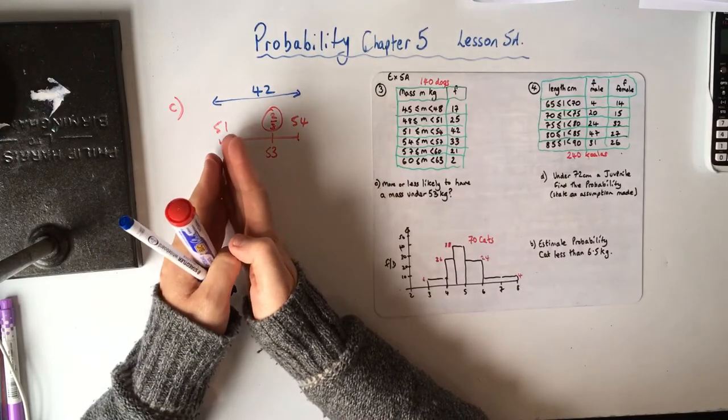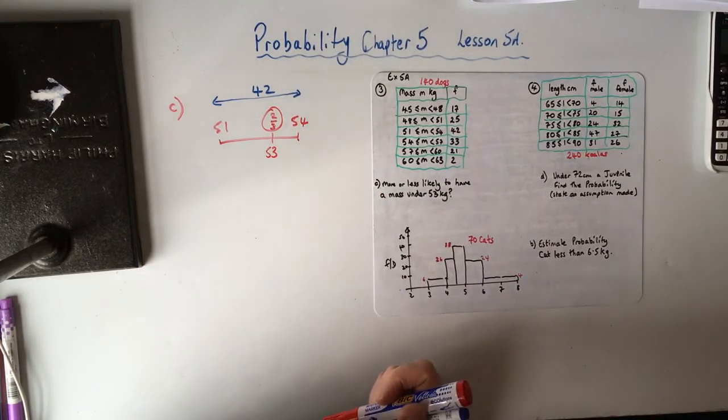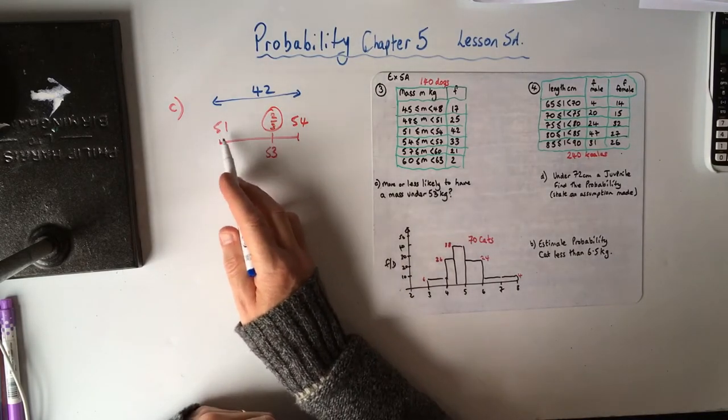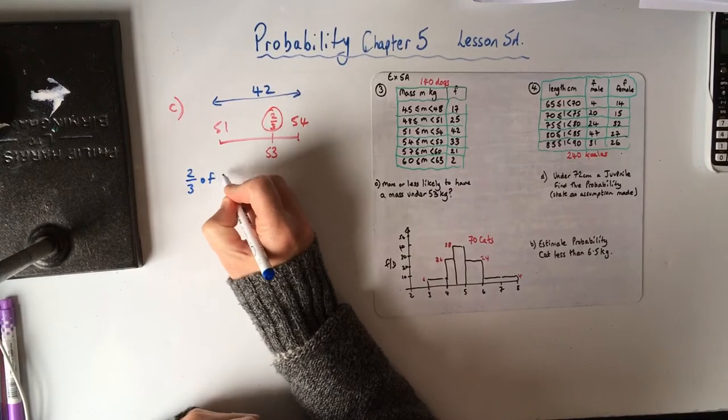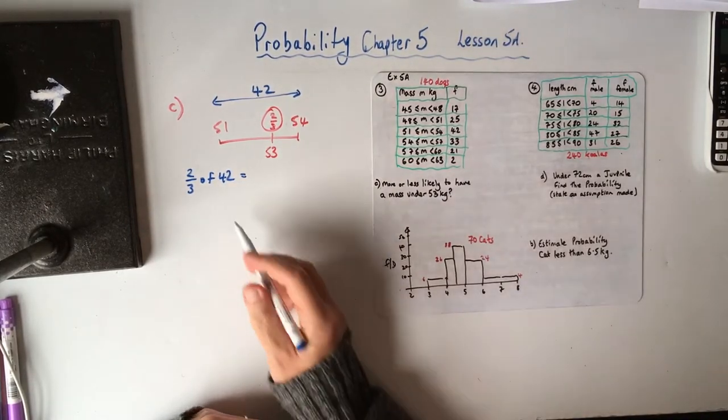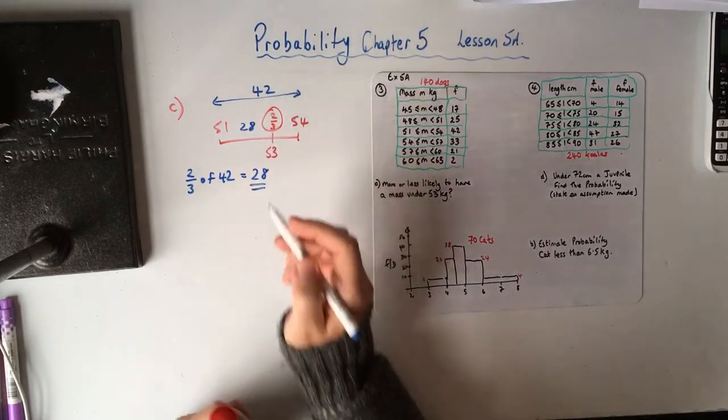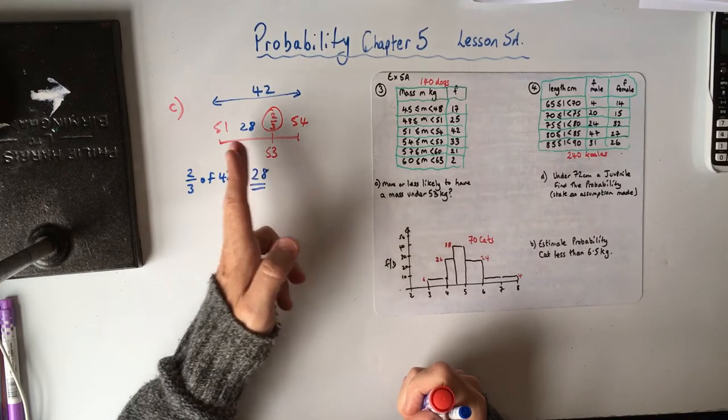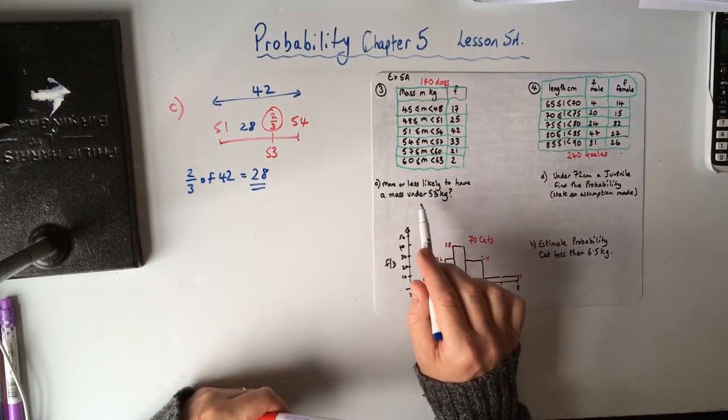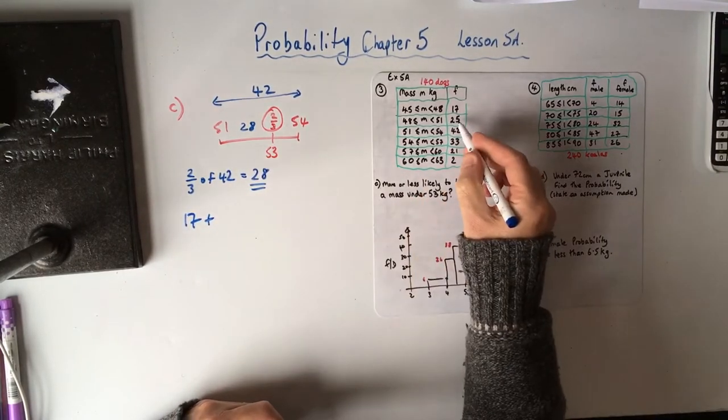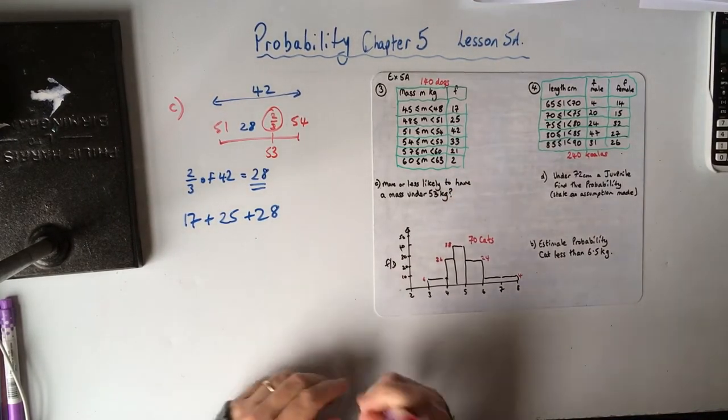So this bit at the end where it says what assumption have you made, well, the assumption that we're making is that those 42 dogs within that particular group are evenly spaced, their weights are evenly spaced within the group. So two thirds of the way through that group up to 53 means two thirds of 42, and they've given you a number that divides nicely by three, which is 14, so two lots of 14 is 28 dogs. So there's 28 dogs in that group in the first two thirds of the group.